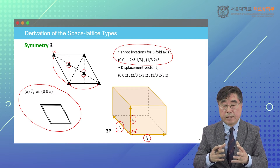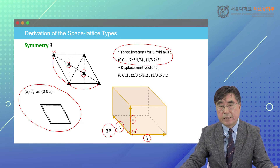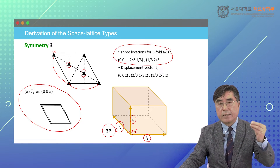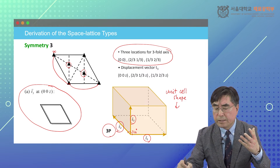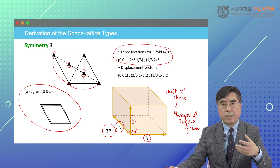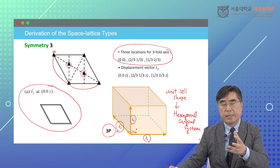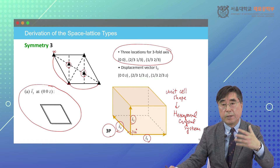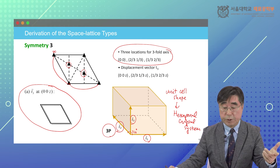This one I call 3P. The unit cell shape is basically the same as a hexagonal crystal system, but it starts from three-fold symmetry information. The unit cell shape is the same as a hexagonal crystal system, which I will explain later. So we can call it primitive hexagonal Bravais lattice, even though it starts from a three-fold system.